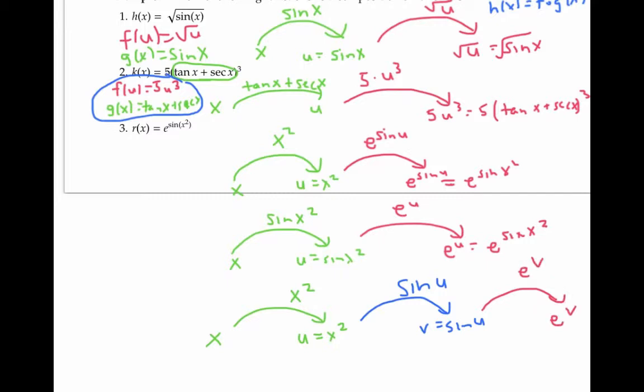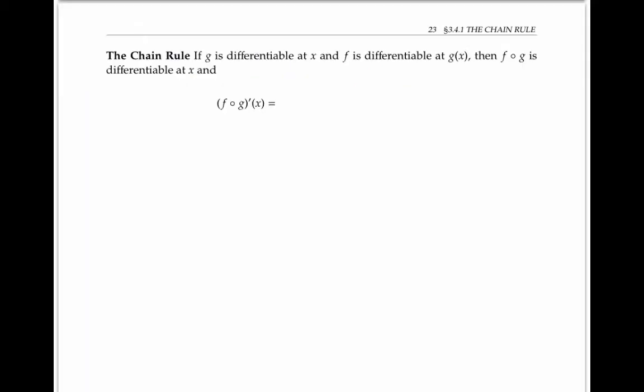When taking the derivatives of complicated functions, it's really important to be able to recognize them as the composition of other functions, because then the chain rule — which we're about to see — will tell us what to do. The chain rule tells us that if we have two differentiable functions, then the derivative of f composed with g is equal to f prime evaluated at g of x, times g prime of x.